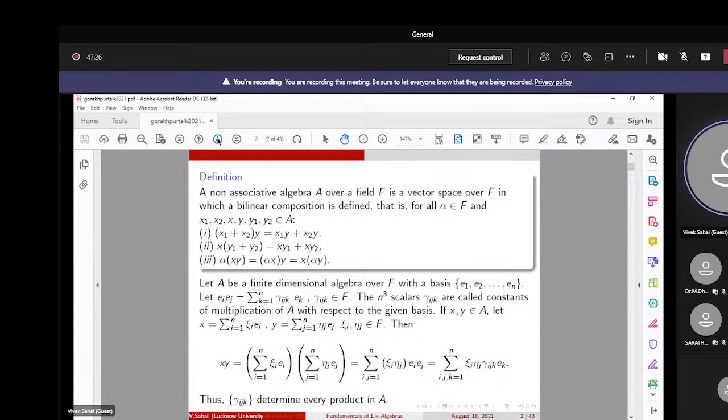Now these constants γᵢⱼₖ are n³ in number (each i, j, k vary from 1 to n), and are called the structure constants or the constants of multiplication of our algebra A with respect to the given basis.